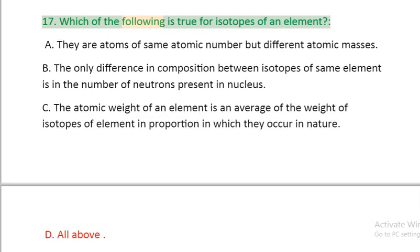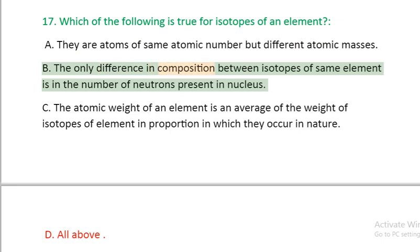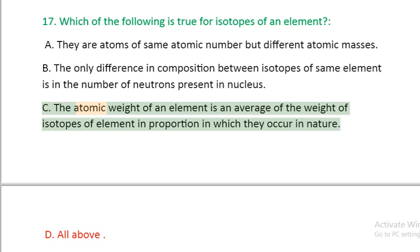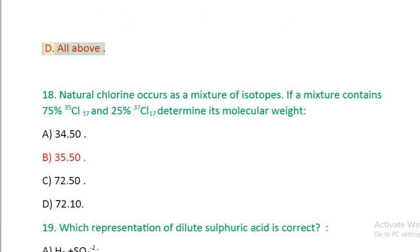Question 17: Which of the following is true for isotopes of an element? A. They are atoms of same atomic number but different atomic masses, B. The only difference in composition between isotopes of same element is in the number of neutrons present in nucleus, C. The atomic weight of an element is an average of the weight of isotopes of element in proportion in which they occur in nature, D. All above.